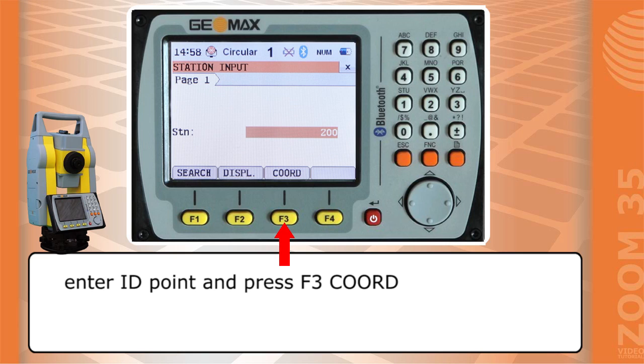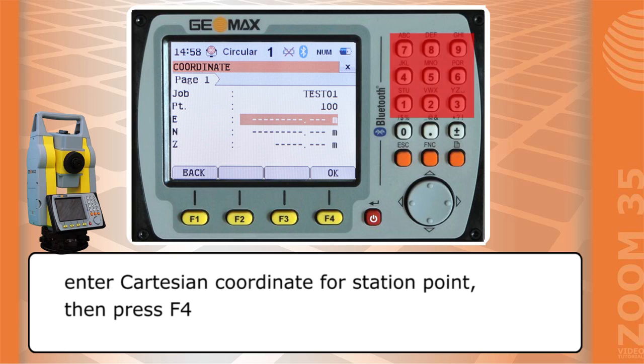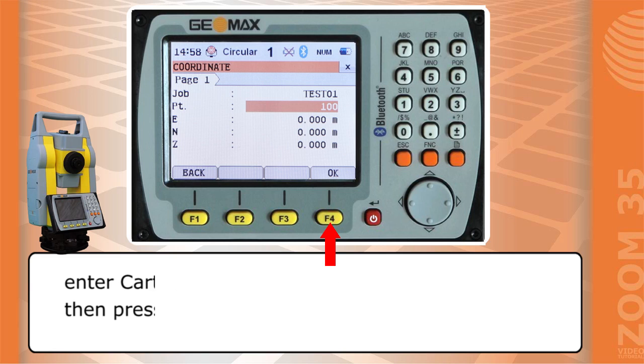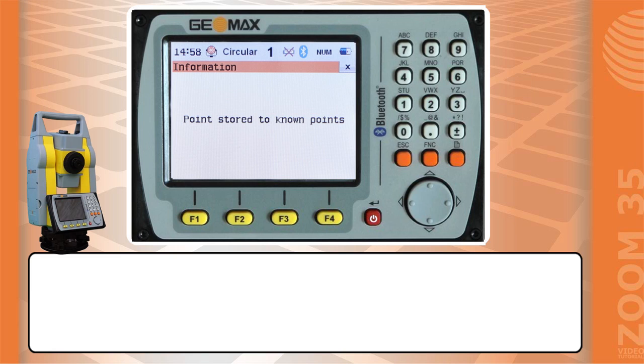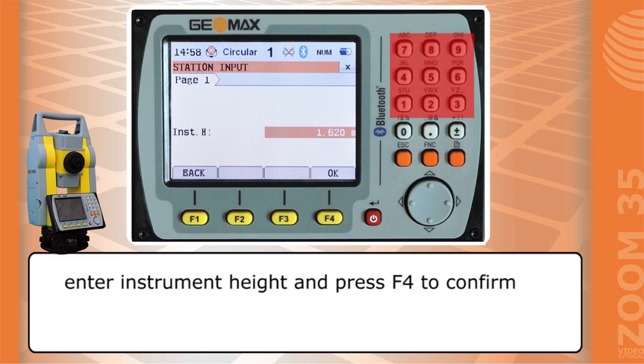Enter Y D point and press F3. Enter cartesian coordinate for station point, then press F4. Enter instrument height and press F4 to confirm.